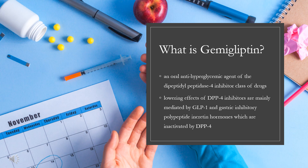Gemagliptin, sold under the brand name Zamiqlo, is an oral antihyperglycemic agent of the dipeptidyl peptidase-4 (DPP-4) inhibitor class of drugs. The glucose-lowering effects of DPP-4 inhibitors are mainly mediated by GLP-1 and gastric inhibitory polypeptide incretin hormones, which are inactivated by DPP-4.